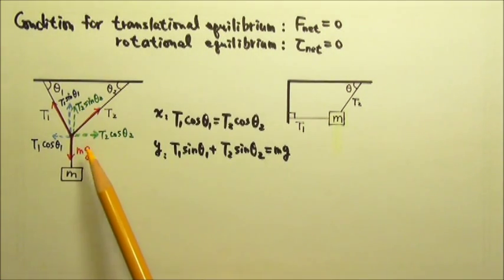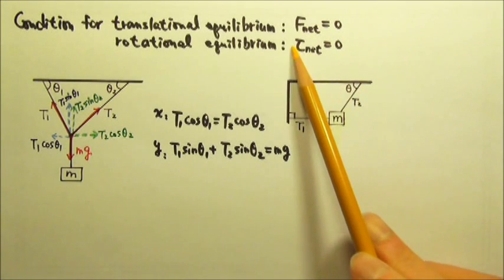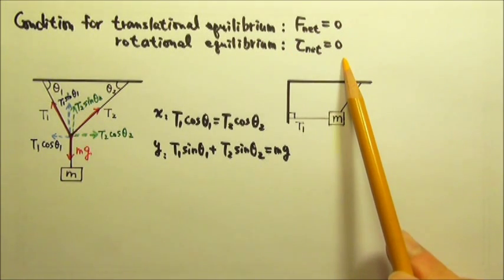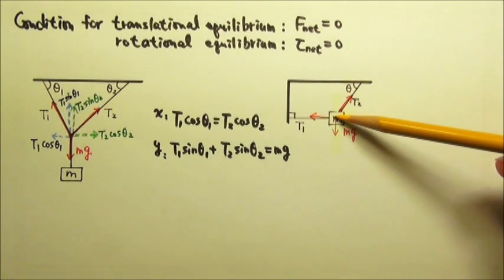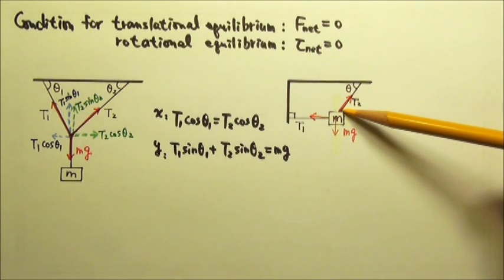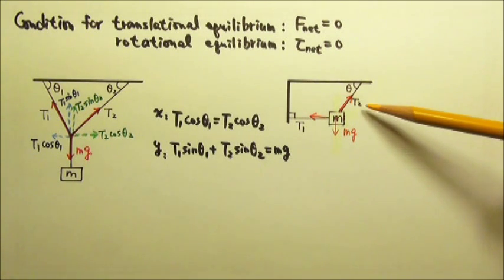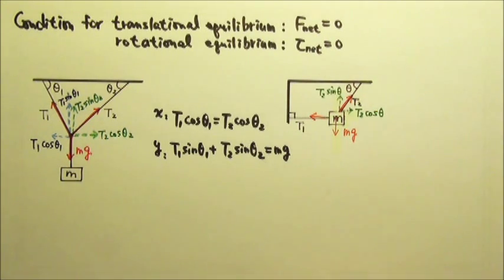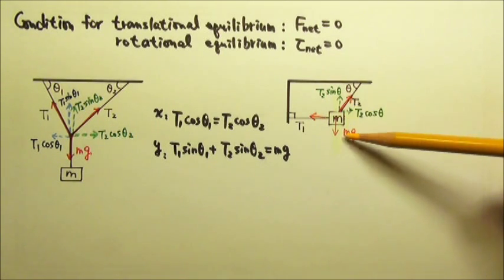In this scenario, all forces go through one point, so no torque is produced. Therefore, we do not have to write net torque equals zero because it would just be zero equals zero. For this one, we would just have mg from the center of mass and T1 and T2 from the contact point. Again, it's a two-dimensional case, so we separate the x and the y, which means we find the components for T2. The net force equals zero means left and right are equal and up and down are equal.